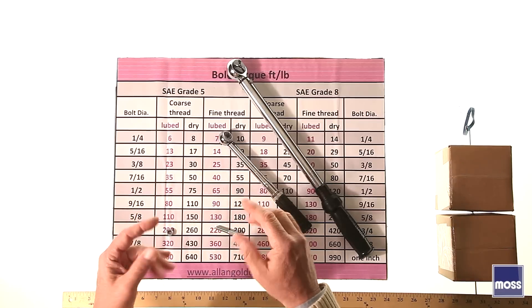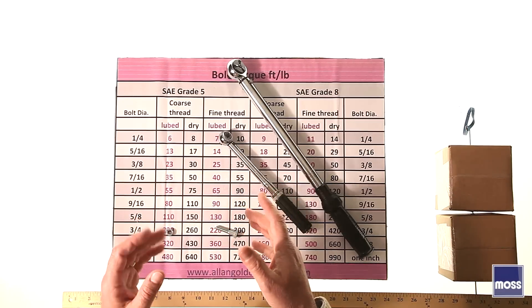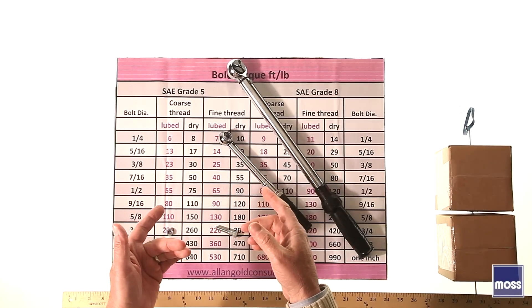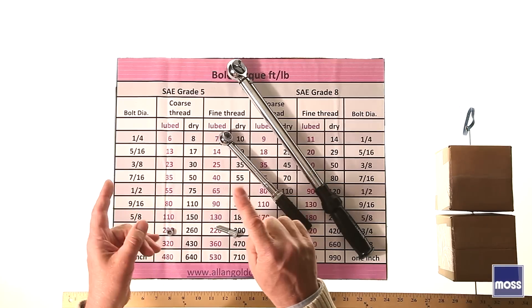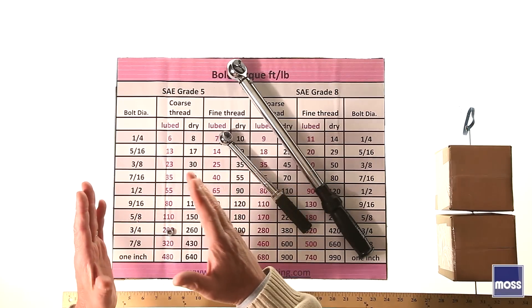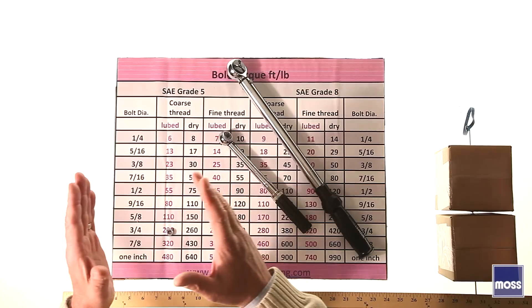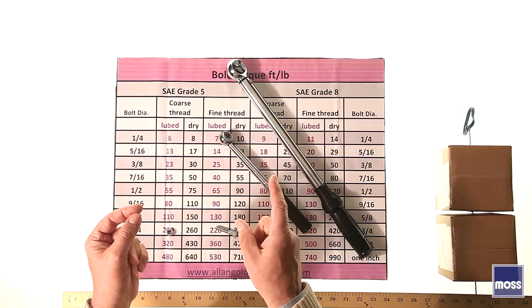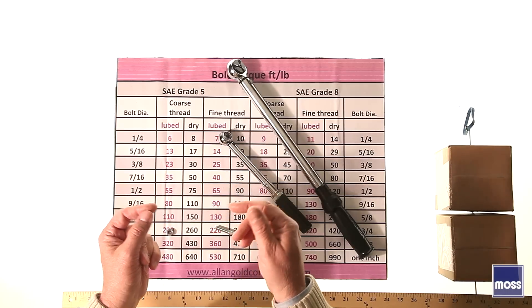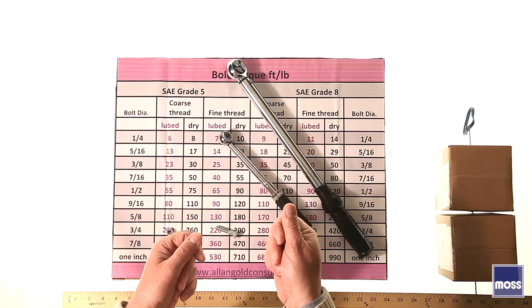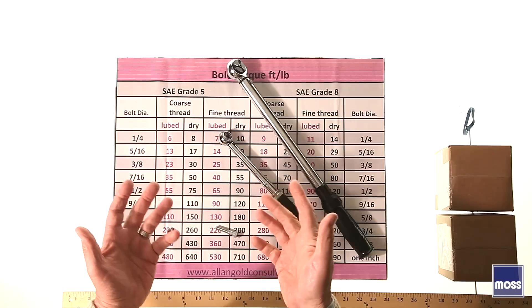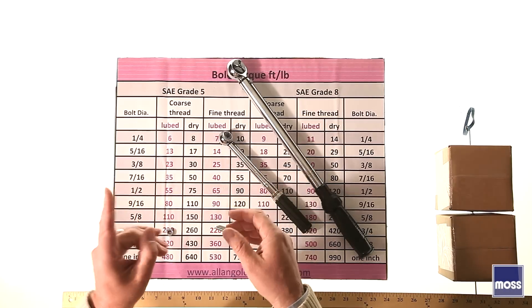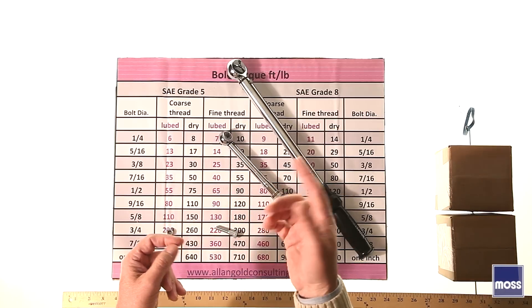Torque specifications for our classic British cars are usually called out in foot-pounds. These cars are located all over the world. The International Standard of Units, usually written SI Units, measures weight in newtons instead of pounds and distance in meters instead of feet. One foot-pound equals 1.46 newton meters, and one newton meter equals 0.737 foot-pounds.